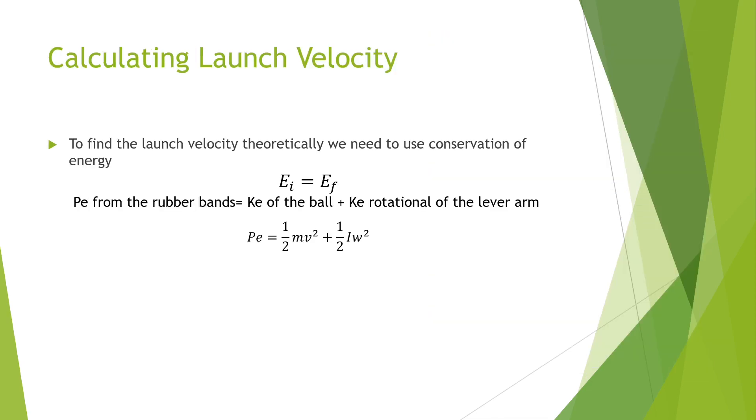To find the launch velocity theoretically we needed to use conservation of energy. Energy initially equals energy final. So the potential energy from the rubber bands is converted to kinetic energy of the ball plus kinetic rotational energy of the lever arm.